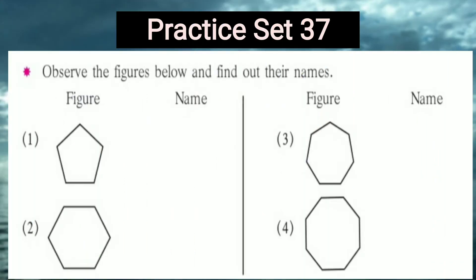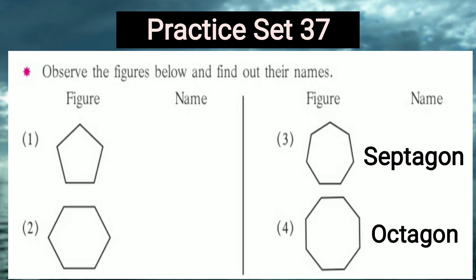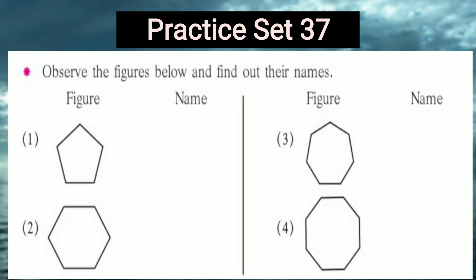We are taking Practice Set 37. The question is: observe the figures below and find out their names. There are 4 figures given and you have to find the name of each figure. The first figure has 5 sides, the second has 6 sides, the third has 7 sides, and the fourth has 8 sides.